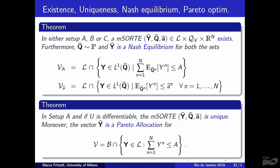We establish existence, uniqueness, Pareto optimality, and Nash equilibrium properties under three different sets of assumptions, labeled A, B, and C, requiring three separate existence proofs. Under differentiability of U, uniqueness is obtained and the optimal Y is also a Pareto allocation.